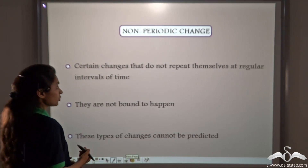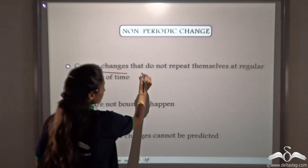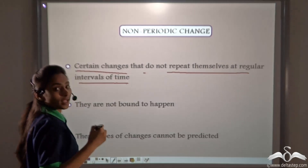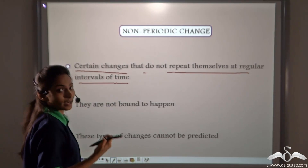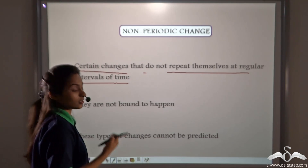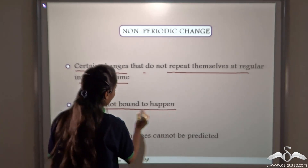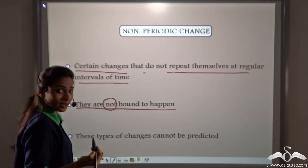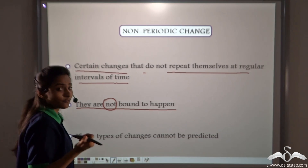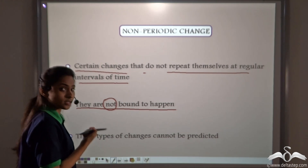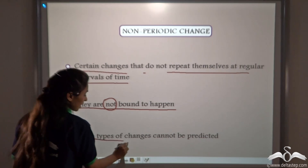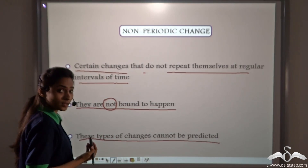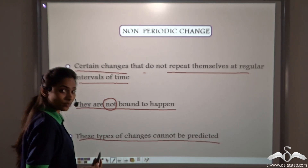What are non-periodic changes? Certain changes that do not repeat themselves at regular intervals of time — they can take place at any time, not after a fixed interval of time. They are not bound to happen. As they can take place at any time, we don't know whether these changes may or may not occur. These types of changes cannot be predicted.